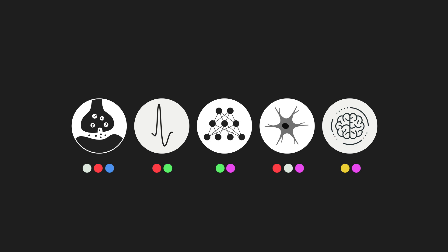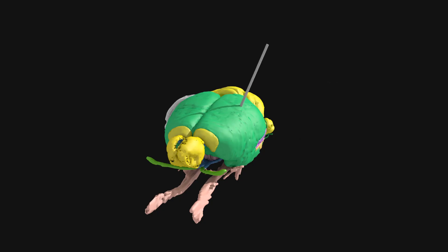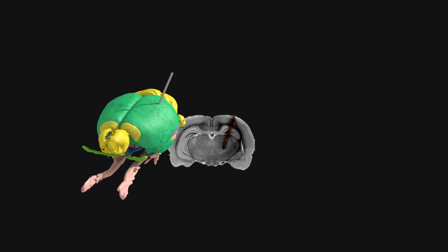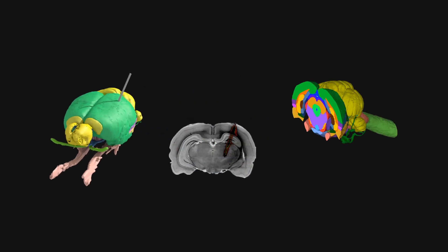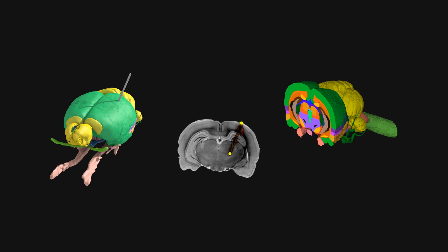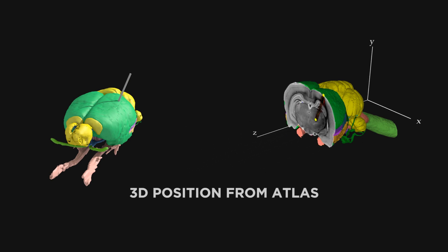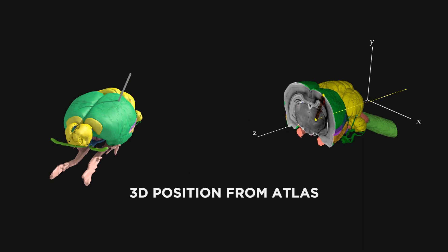The metadata are to a high degree standardized. This makes it possible to compare data produced in different laboratories, otherwise not possible. The curation also uses the brain atlases employed in the Human Brain Project. All data are tagged with location information indicating where in the brain the data are from.